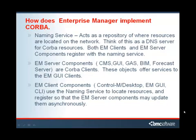Enterprise Manager implements CORBA through three major components: the Naming Service, the EM Server Components, and the EM Client Components. The Naming Service acts as a repository where resources are located on the network — think of it as a DNS server for CORBA resources. Both EM clients and EM Server Components register within the Naming Service. EM Server Components are also CORBA clients, and these objects offer services to the EM GUI clients. EM Client Components use the Naming Service to locate resources and to register so that EM Components may update them asynchronously.